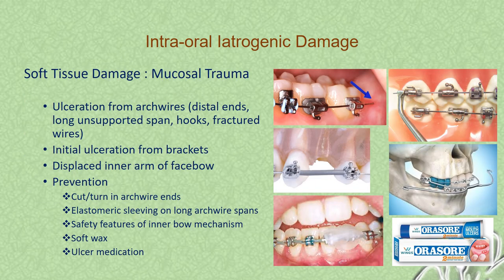Mucosal trauma can arise as ulceration from arch wires. If arch wire distal ends are left uncut and sharp, they will ulcerate the mucosa. Unsupported spans of wires, hooks, and fractured wires are also causes. There is also initial ulceration from brackets in the initial phase of treatment. If a labial bow is used, a displaced inner arm of the labial bow can also cause ulcerations.